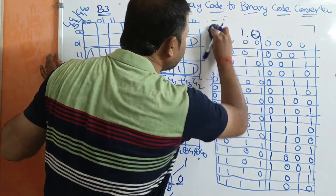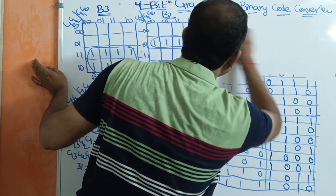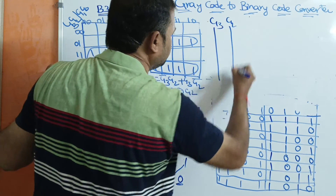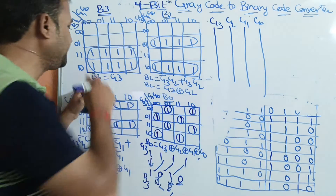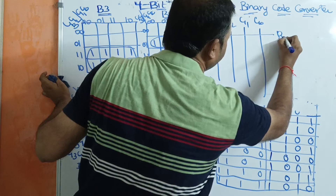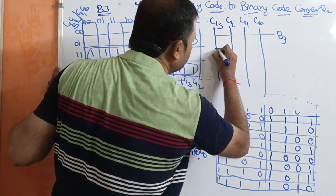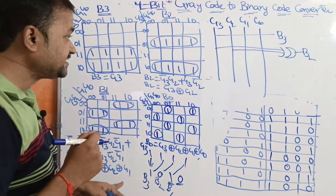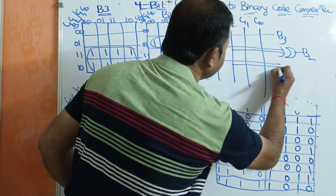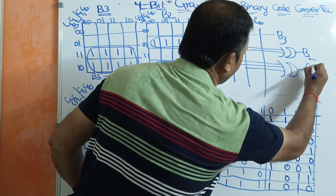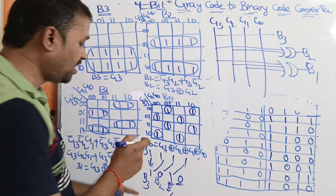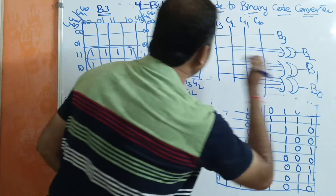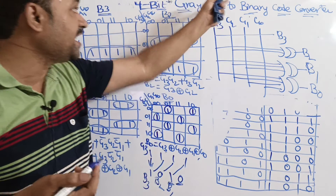Now let us draw the logic circuit diagram. The 4 inputs are g3, g2, g1, g0. The formula for b3 is simply g3. For b2, we perform g3 exclusive-OR g2. For b1, we perform g3 exclusive-OR g2 exclusive-OR g1. For b0, we perform g3 exclusive-OR g2 exclusive-OR g1 exclusive-OR g0. In this way we can easily convert a grey code into binary code.